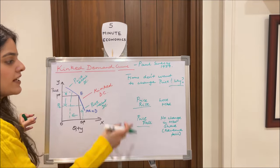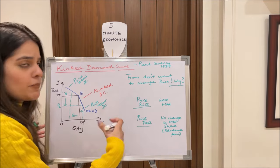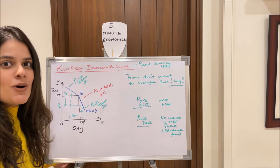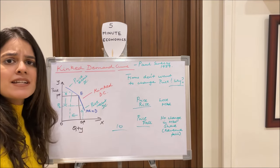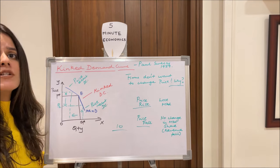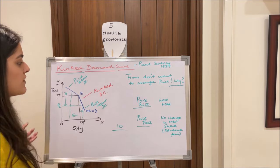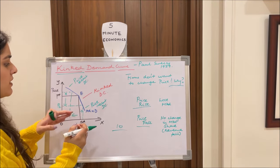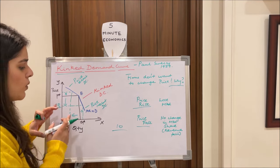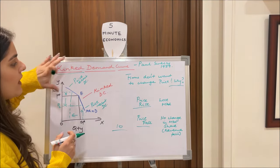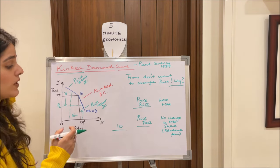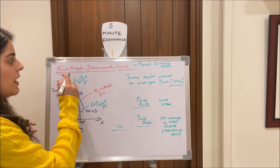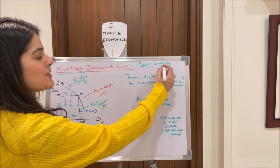So in an oligopolistic market, firms tend to keep prices very rigid. If they raise the price they lose market share; if they lower the price they trigger price wars and everyone loses. So why change the price at all? If it's at 10, why raise it to 12 or lower it to 8? That is what the kinked demand curve illustrates — a price elastic portion above and a price inelastic portion below the kink.